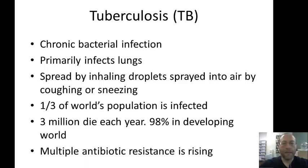Another major disease is tuberculosis — a chronic bacterial infection that primarily infects the lungs, spread by inhaling droplets from coughing and sneezing. A third of the world's population is infected, three million die every year, and 98% of that is in the developing world. Multiple antibiotic resistance is rising — bacteria and other microbes may be invisible, but the way we use antibiotics has a lot to do with which ones survive.